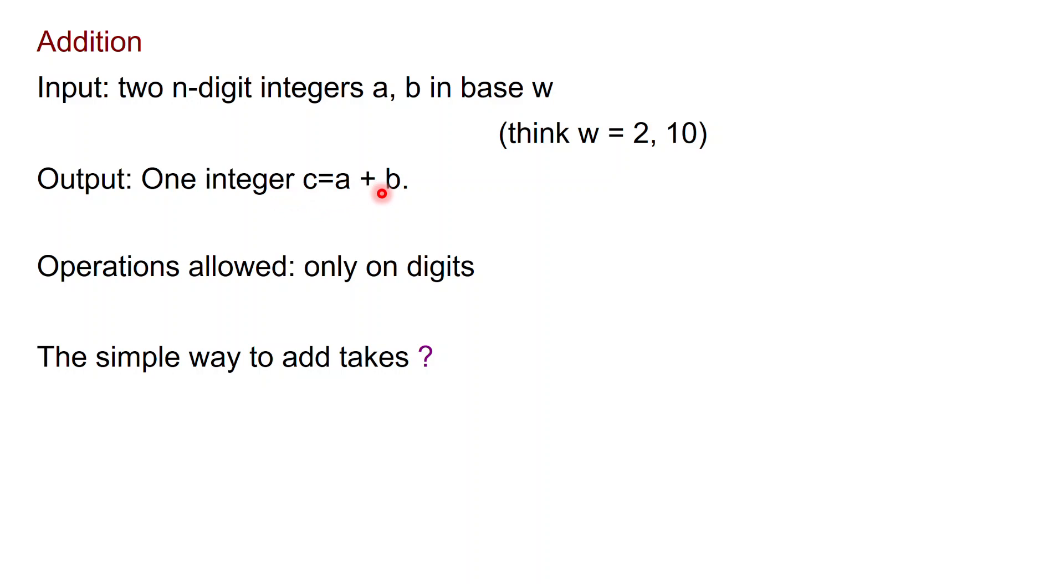And the output that you want is one integer c, which is the sum a plus b. Which type of operation do we allow? We are only going to allow operations on digits. This is going to make sense because we are going to look at very long numbers. The simple way to add takes how many operations? It just takes a linear amount of operations, order of n.